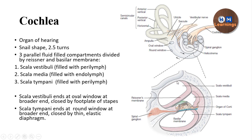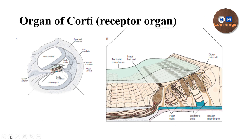Within the cochlea we have the organ of Corti, which lies on the basilar membrane. The organ of Corti is called a receptor organ because it contains the receptors responsible for transducing sound energy into electrical energy. The basilar membrane extends from the base to the apex of the cochlea, and the total length of the cochlea is about 33 millimeters. As we progress from base to apex, the chambers reduce in size.